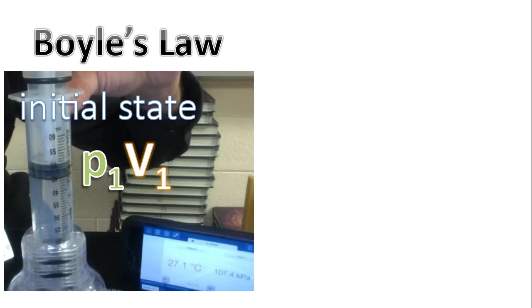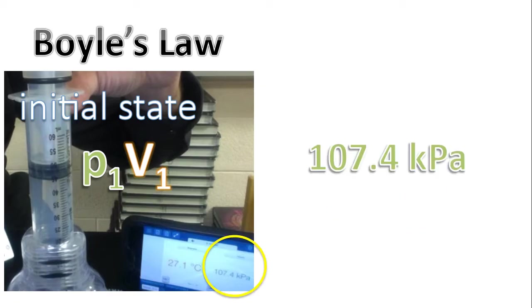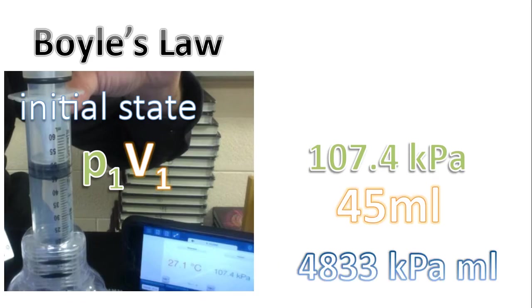And so, for example, we can say that this is our initial state. Notice I've circled the volume there—it's 45 mL, and I've circled the pressure, 107.4 kilopascals. So when we multiply these two quantities, pressure times volume, we end up with that value there: 4,833 kilopascals milliliters.